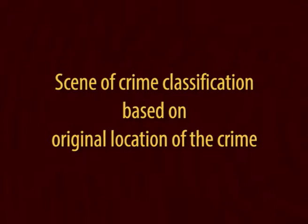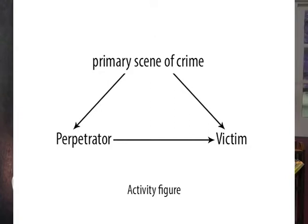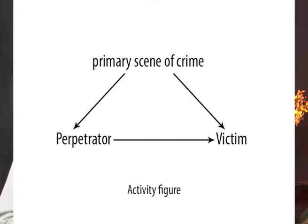Scene of crime classification based on original location of the crime. A. Primary scene of crime: This is the main place of crime where all the activity has been performed by the perpetrator of crime. It can be explained by the help of a figure, which depicts the relation between the primary scene of crime, perpetrator, and victim — it is the activity figure which explains the contact between subjects and things.